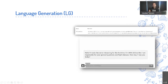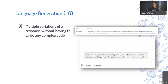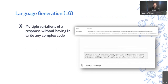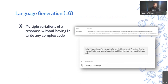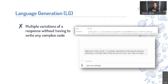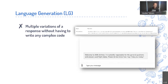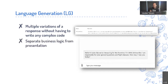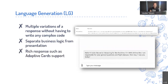Now let's look at some of the latest capabilities released in the past couple of months. Language Generation (LG) allows you to build multiple variations of the same response without writing any code. This is important because repeating the same message doesn't feel natural in a conversation. LG also separates business logic from presentation — especially useful in Composer — and you can still embed cards and other activities using LG.